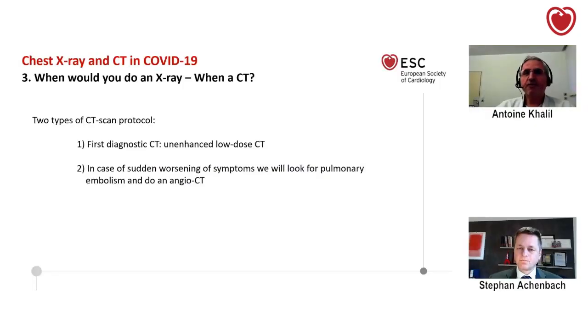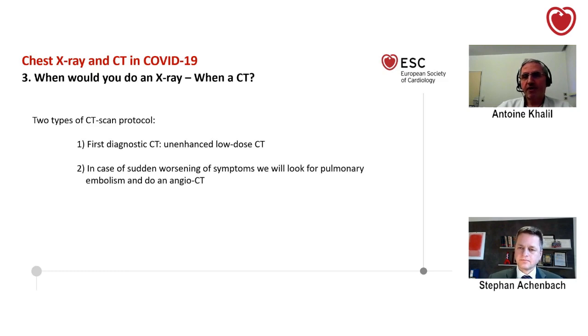Regarding CT protocols, for the first presentation in the emergency department we perform an unenhanced low-dose CT, which is sufficient to diagnose the disease and assess its extension. For follow-up we can use unenhanced CT. However, if there is a sudden worsening of symptoms, we must look for pulmonary embolism — these patients have very high D-dimer levels and pulmonary embolism is more frequent than in the normal population. In that case, we perform an enhanced CT.